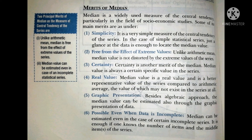Second is free from the effect of extreme values. Unlike arithmetic mean, median values are not distorted by the extreme values of the series. Arithmetic mean gets distorted when there are very high values in the series, but the median value is not affected by such extreme values at all.